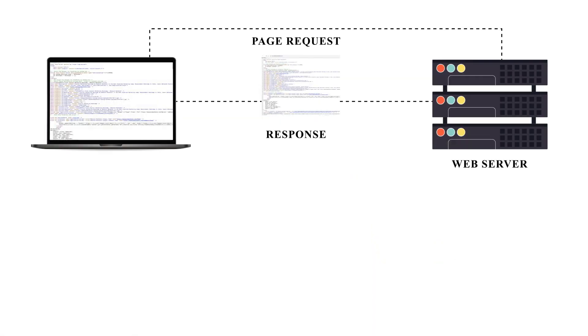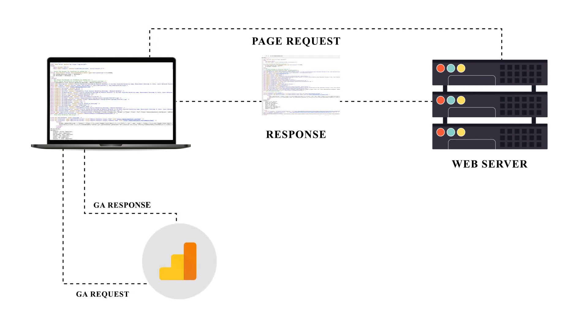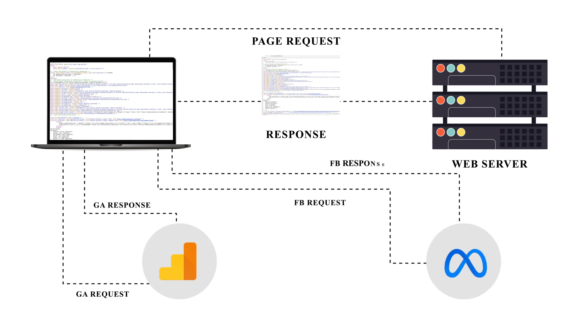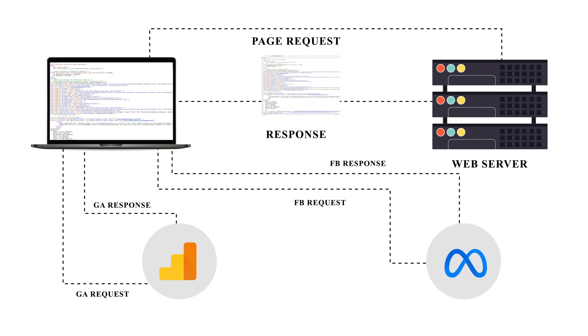I'm focusing on this testing server because, in the same way the browser encounters the A/B testing code, it also comes across a new code called the Google Analytics code — and that is when the browser makes a request to Google Analytics. It also comes across the Facebook Pixel code — and that is how the browser makes a request to Facebook Pixel servers. All requests are made from the browser to these various endpoints, whether it be the analytics endpoint or the Facebook endpoint.